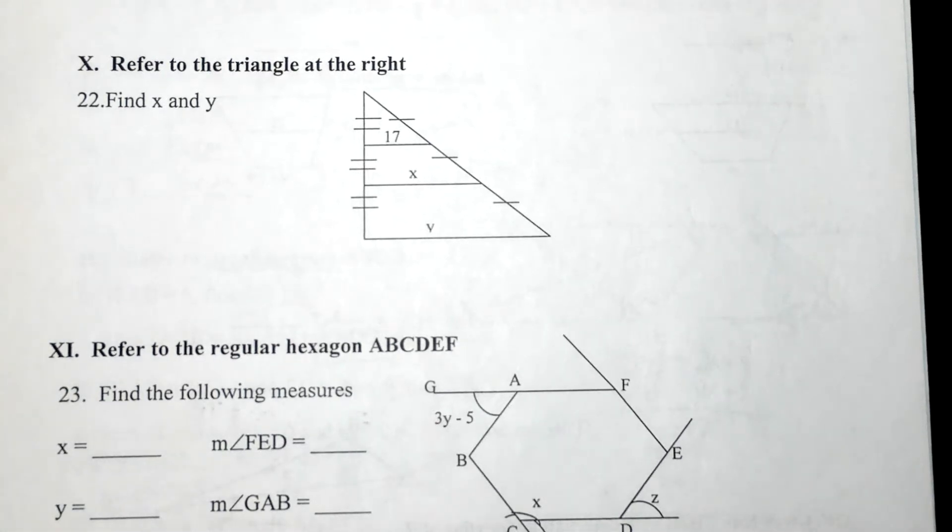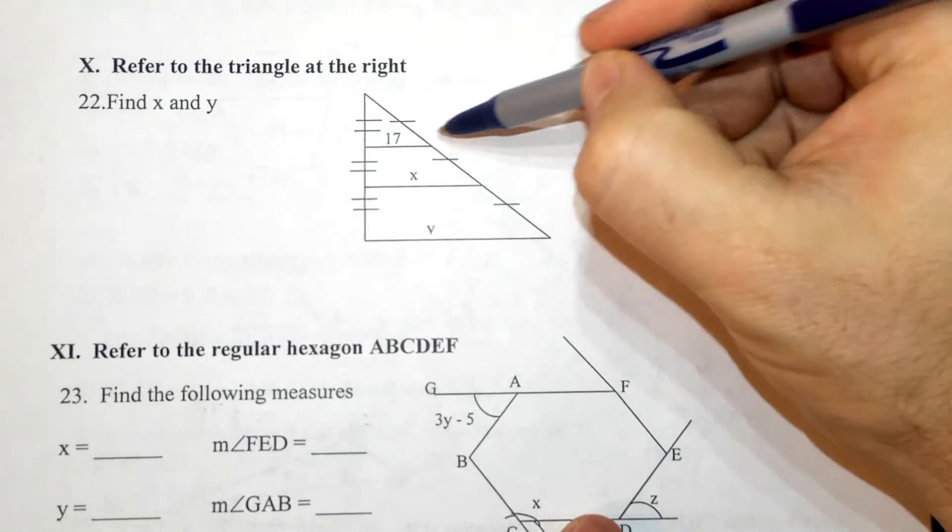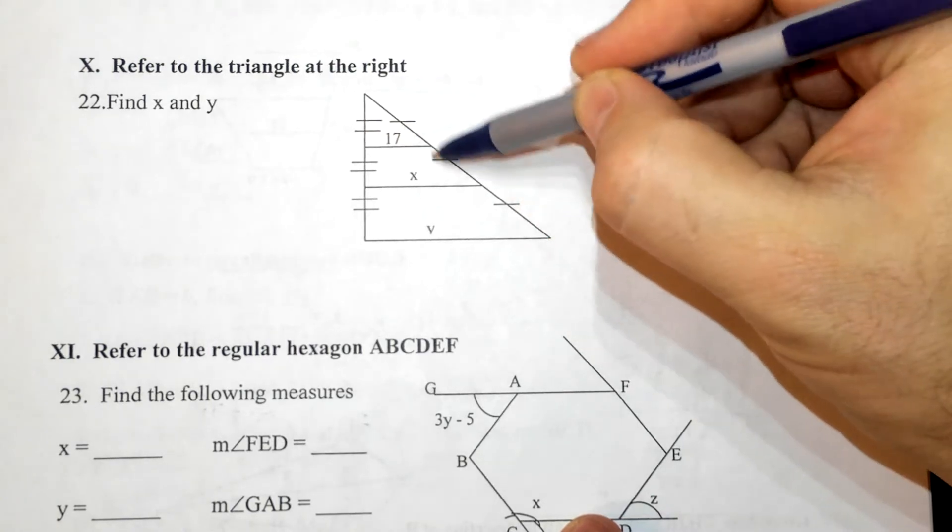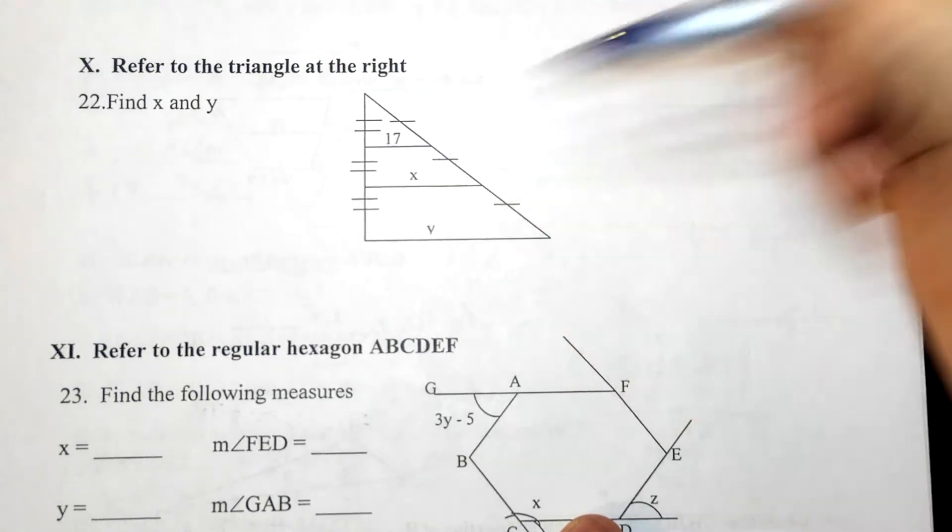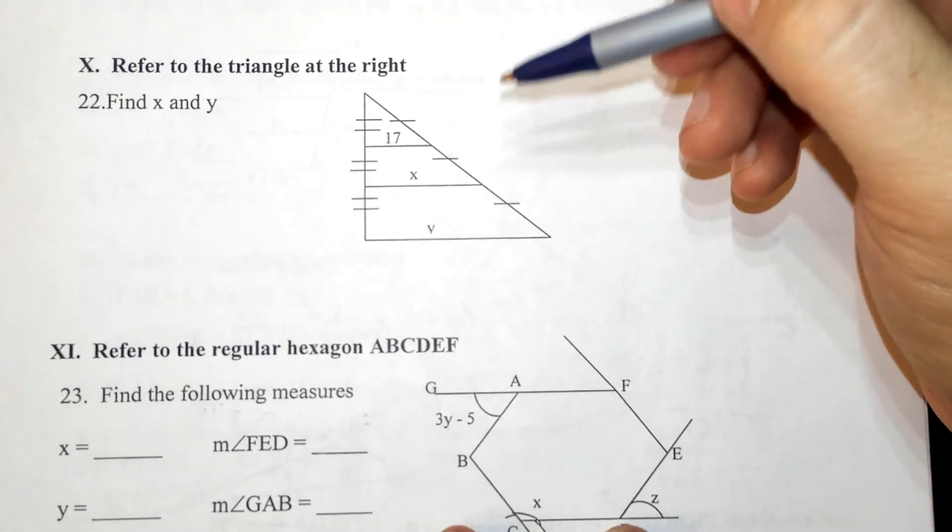For number 22, we've got this rather bizarre shape. One thing I can tell though is that as I look at it, each of these increments is going to be equal. In order to find x and y, I'm going to split this up into whatever I can see.